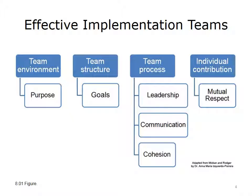Micken and Roger described effective teams to include four major domains: Team Environment, Team Structure, Team Process, and Individual Contribution. They propose that only six team characteristics actually drive effectiveness. These six drivers include: having a shared purpose that clearly demonstrates shared ownership; establishing goals that link the team's purpose with desired outcomes; having team leaders who set and maintain structures for decision-making and conflict management; establishing regular patterns of communication where all members share ideas; developing group cohesion through camaraderie and involvement; and exhibiting a high degree of mutual respect with acceptance of diversity and professional contribution.